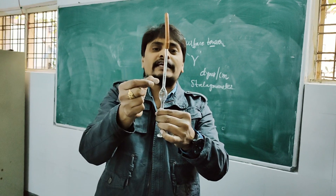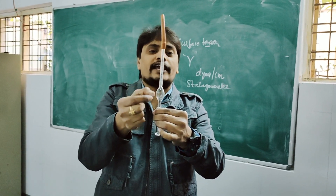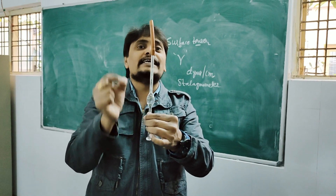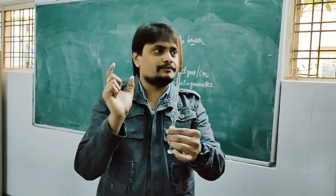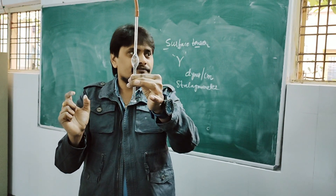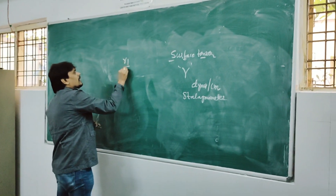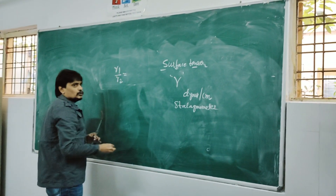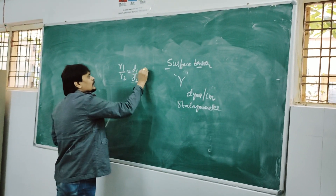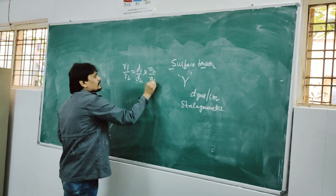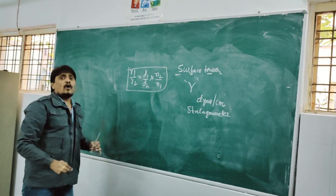The number of drops traveling from mark A to mark B is used to determine the surface tension using the following mathematical expression: γ1 by γ2 equals D1 by D2 into N2 by N1.